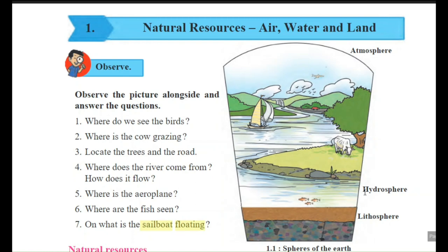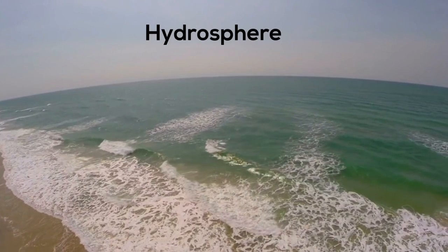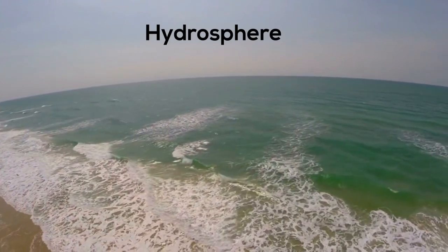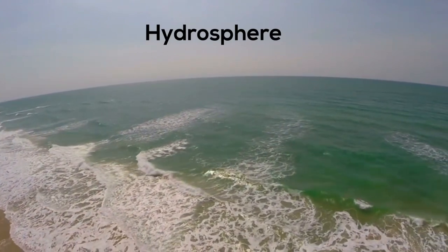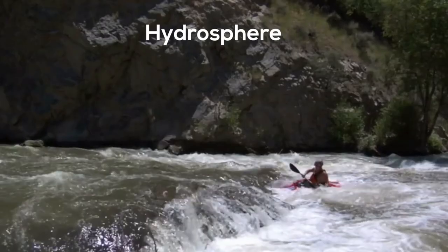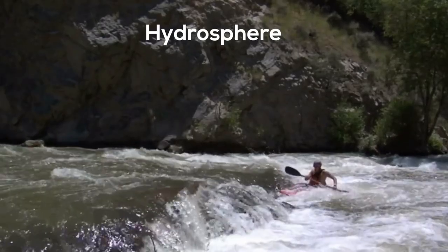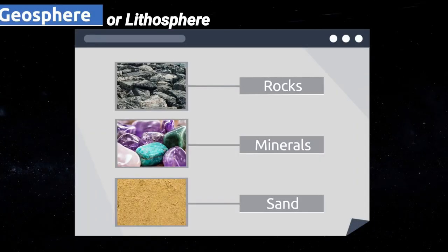The second layer is the Hydrosphere. 'Hydro' means water, so the layer of water is called the hydrosphere. The last one is the Lithosphere — that is the soil and land area. The land area which contains soil and different solid things are all included in the lithosphere.